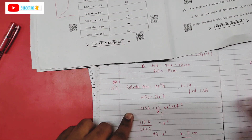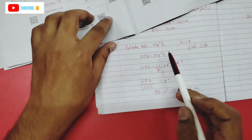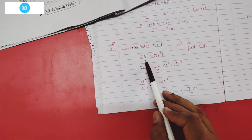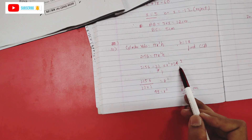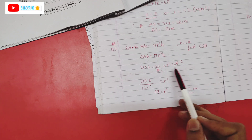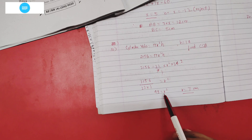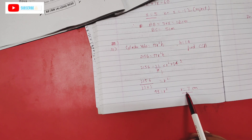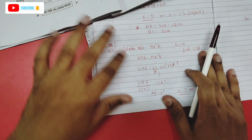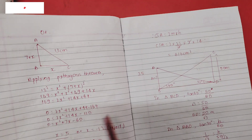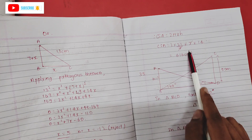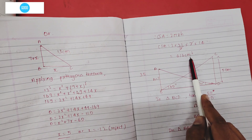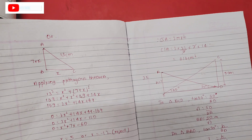We need πr²h for volume. Substituting: π, h, gives r² = 49, so r = 7. Now we have r and h. Write the CSA formula: CSA = 2πrh. The answer is 1,216 cm² approximately. That's very simple.